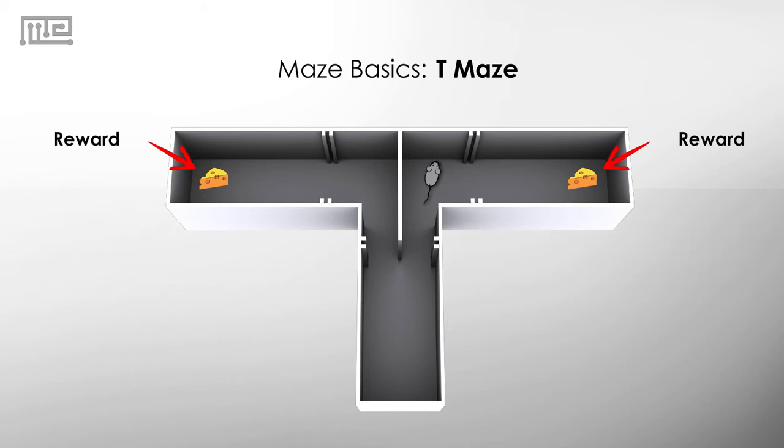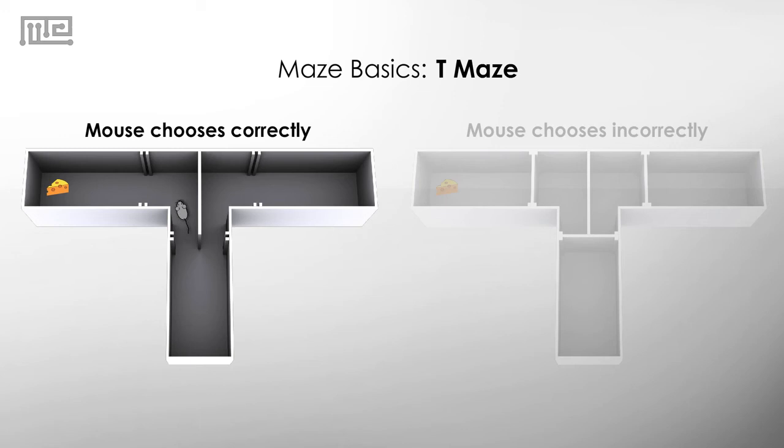The mouse starts and chooses an arm. Close the door to the chosen arm when it goes in to eat the reward and confine the animal there for 30 seconds.